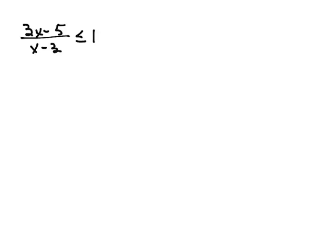So to begin, let's rewrite this as 3x minus 5 over x minus 3 minus 1 is less than or equal to 0. And then let's find the zeros. And the way we're going to do that is we're going to have to get a common denominator.